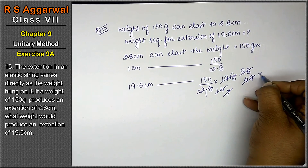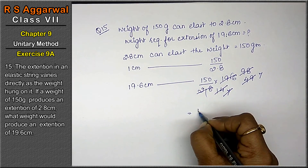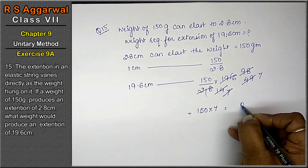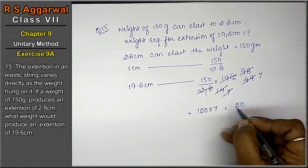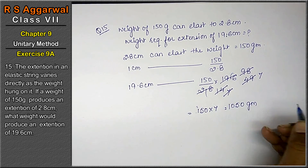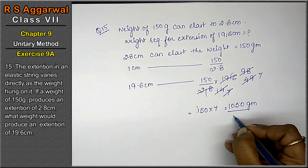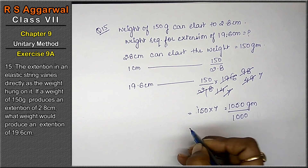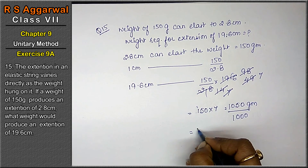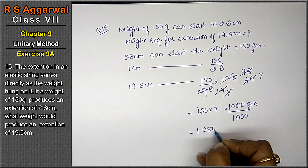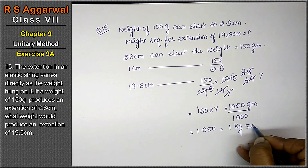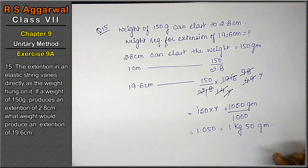Continuing: 7 sevens are 49 — so 150 into 7 gives 1,050 grams. To convert to kilograms, divide by 1000. That means 1.050, or we can say 1 kg 50 grams is the answer.